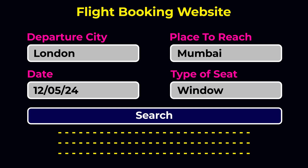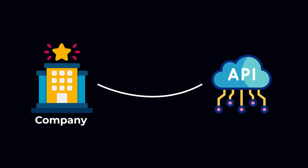Simple as that. Now here is one thing: as we are using the Emirates site, we are only getting the flight details of Emirates flights. But there are some websites where you search flight details and they return multiple flights from multiple airline companies. That's possible because many companies launch their API for public usage — we call these public APIs.